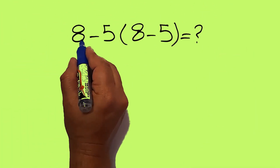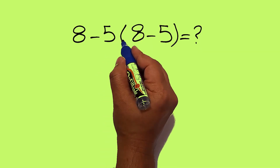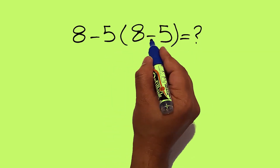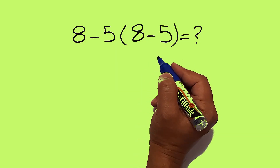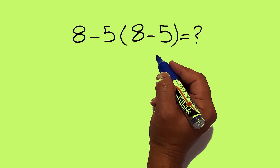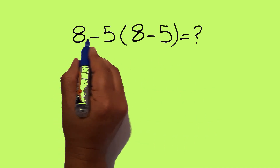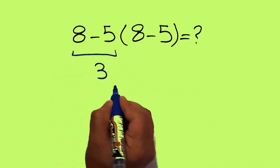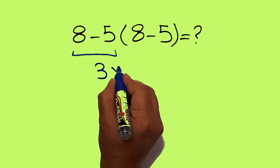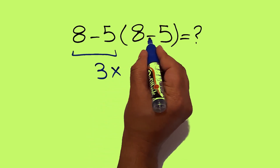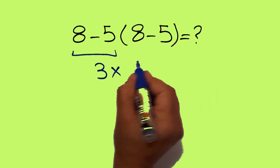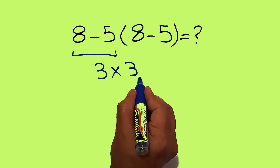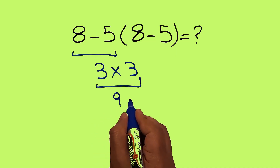8 minus 5, then times these parentheses, and inside these parentheses we have 8 minus 5 again. Are you ready to solve? Let's go ahead and get it started. 8 minus 5 equals 3. And 3 times 8 minus 5 equals 3 again. So 3 times 3, which equals 9. But this answer is not correct.